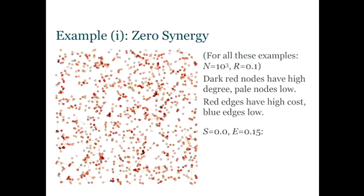Okay, so what does it look like? Here's an example network. This is with zero synergy. So essentially this is a sparsified random geometric graph. So all of these edges are less than R, but not every edge less than R exists. They can't all be afforded. So this is a nice, boring, null spatial model.